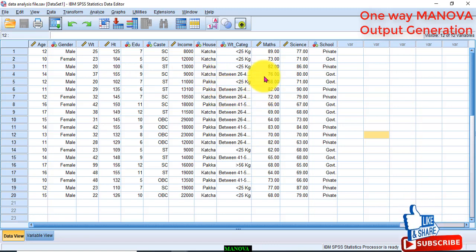I want to check whether the maths score and science score are different across the categories of schools which the student attended before. So, my maths score and science scores, these are two dependent variables. And the school is a categorical variable which will become an independent variable.